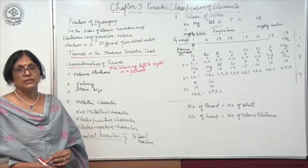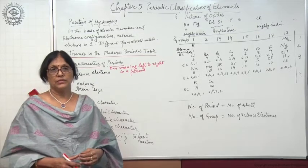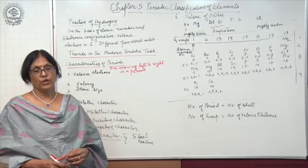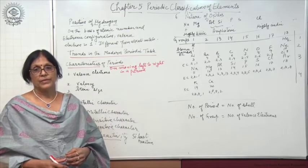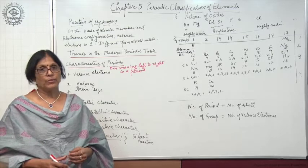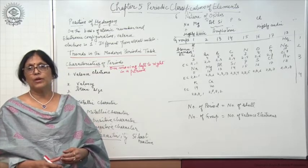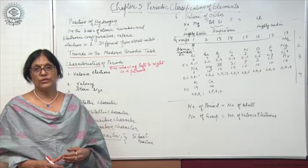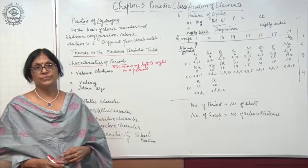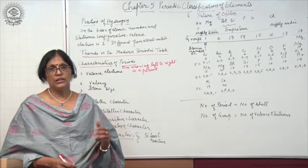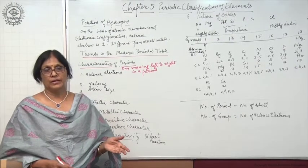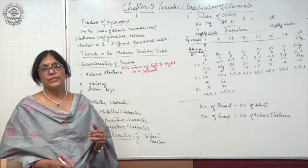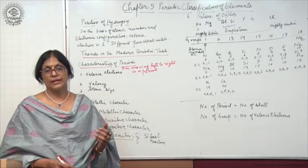As I have told you earlier, atomic number is a more fundamental property as compared to atomic mass. Atomic number gives us the number of protons, which are equal to the number of electrons in a neutral atom. By knowing the number of electrons in an atom, we can write the electronic configuration of that particular atom.